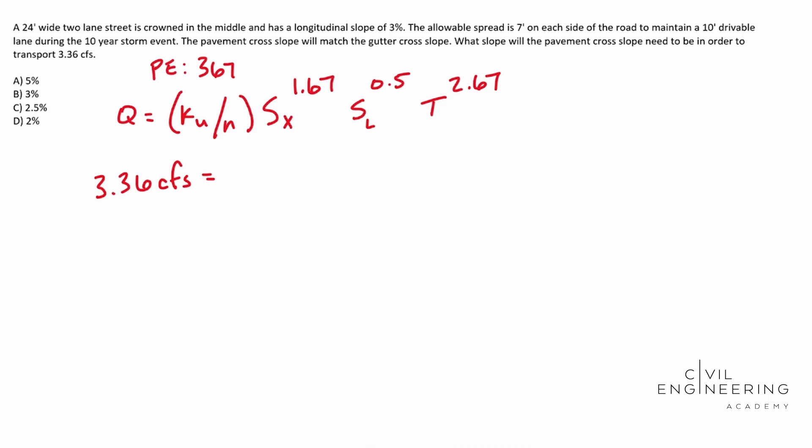Alright. And our K U is actually given, 0.56. That's given to us on that page, 0.56. Divide that by N, which is our roughness coefficient. You can find that on page 388. We will get 0.011. That's a good, safe number.